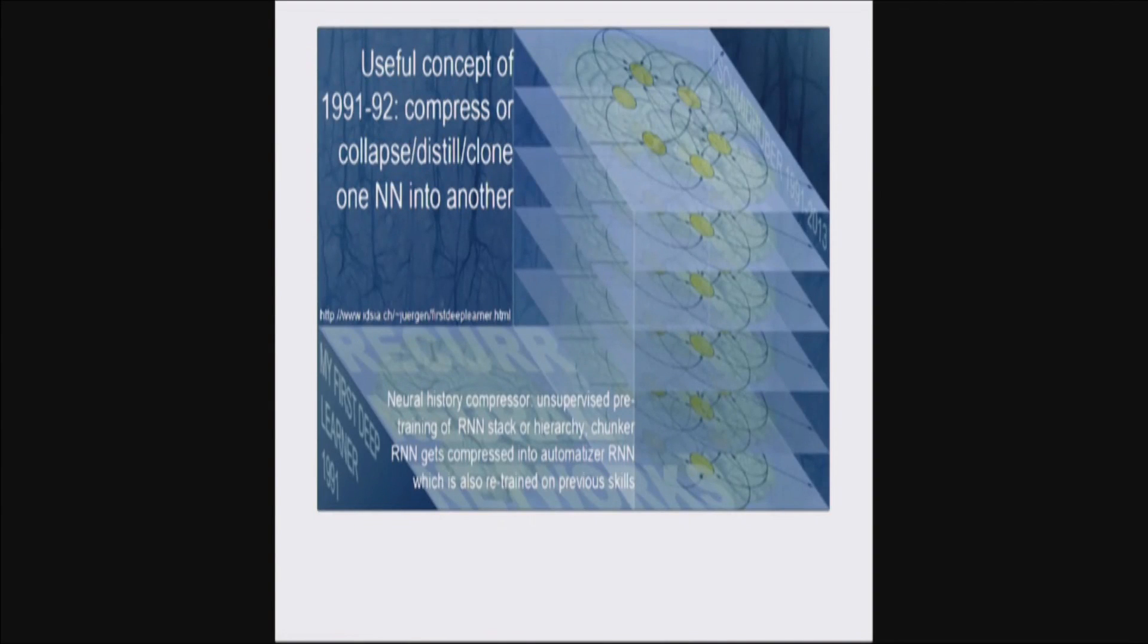So, that is something that you often see now in cloning policies, as it is called, or distilling networks. Back then, it was not called distilling it, but it was called collapsing one net into another or compressing it.